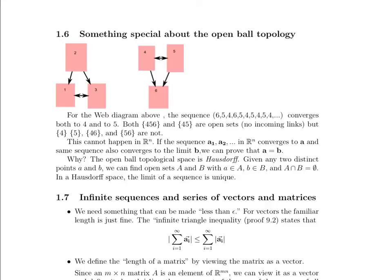Now, the open ball topological space is Hausdorff. And what that means is that we can be given any two distinct points, and we can find open sets around those distinct points that don't intersect with each other. So there's a set that A belongs to, there's a set that B belongs to, and the intersection of those sets is the empty set. And in a Hausdorff space, the limit of a sequence is unique.